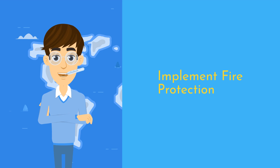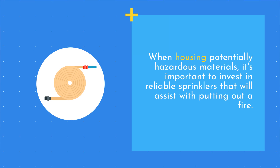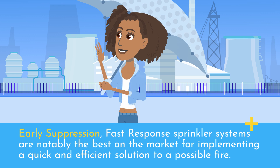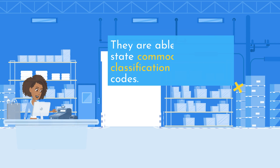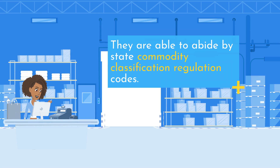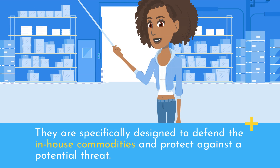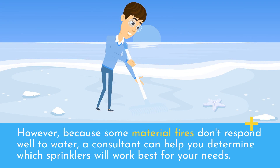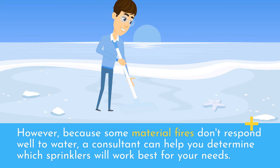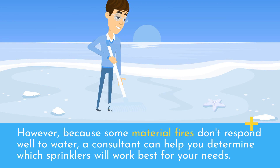Implement Fire Protection: When housing potentially hazardous materials, it's important to invest in reliable sprinklers that will assist with putting out a fire. Early suppression, fast-response sprinkler systems are notably the best on the market for implementing a quick and efficient solution to a possible fire. They are able to abide by state commodity classification regulation codes and are specifically designed to defend the in-house commodities and protect against a potential threat. However, because some material fires don't respond well to water, a consultant can help you determine which sprinklers will work best for your needs.